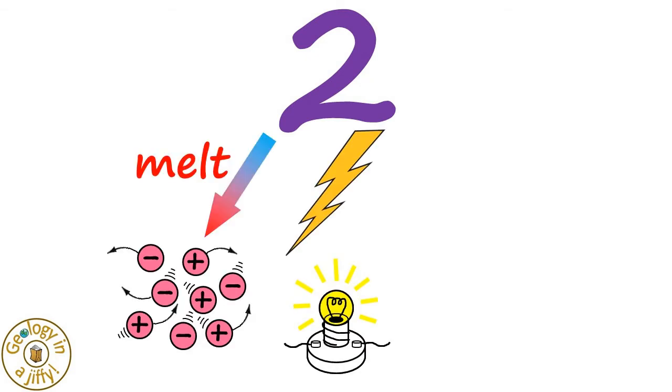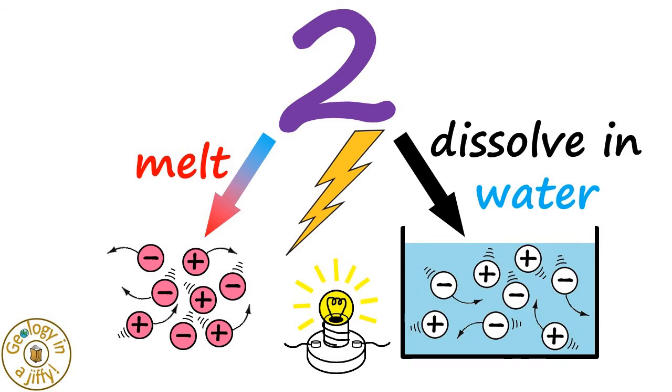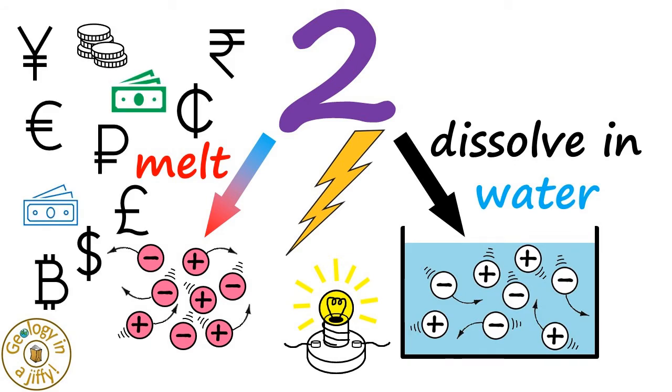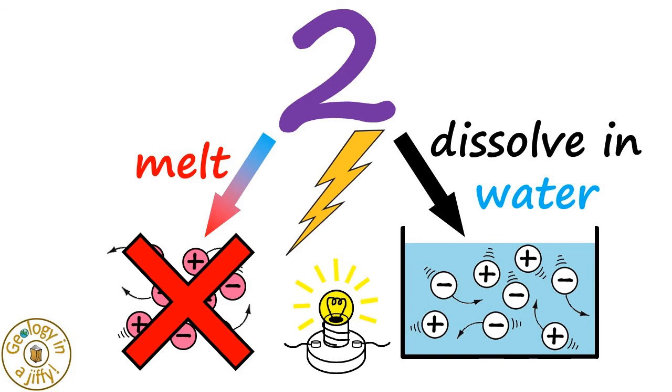We know there are two things we can do to our solid to enable it to conduct electricity, either melt it or dissolve it in water. However, melting salt is costly due to the energy needed, so it is cheaper and easier to dissolve it in water.